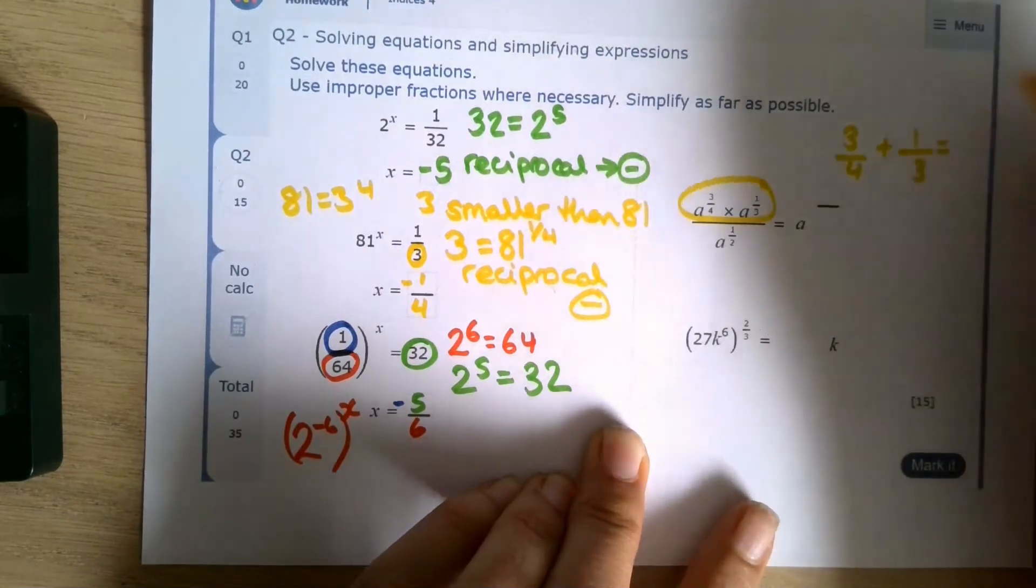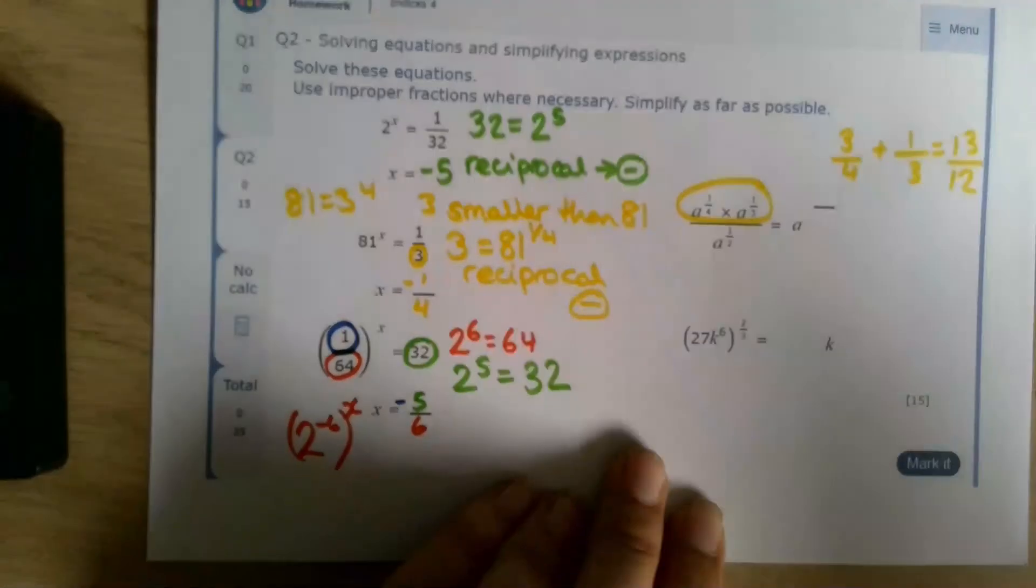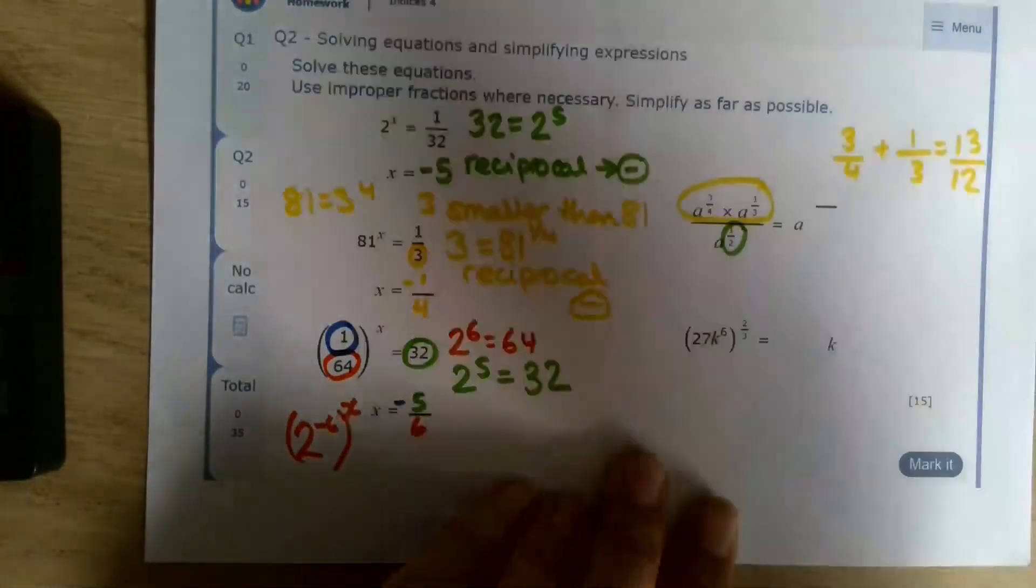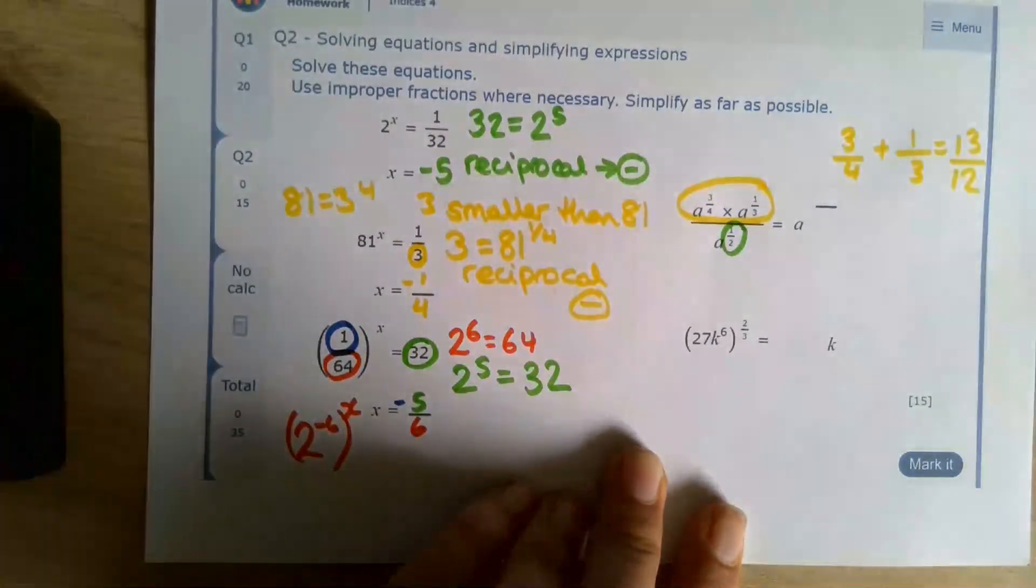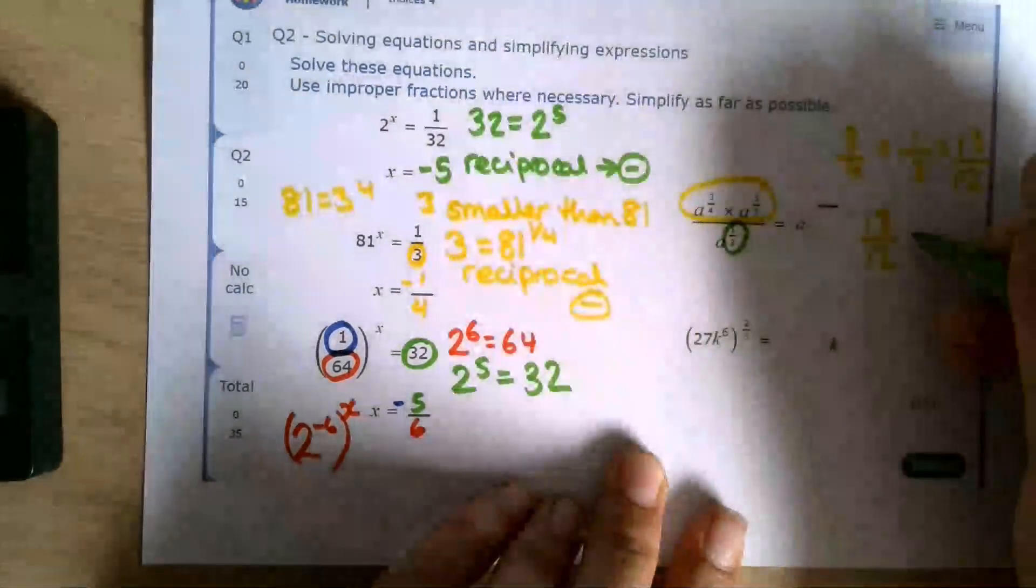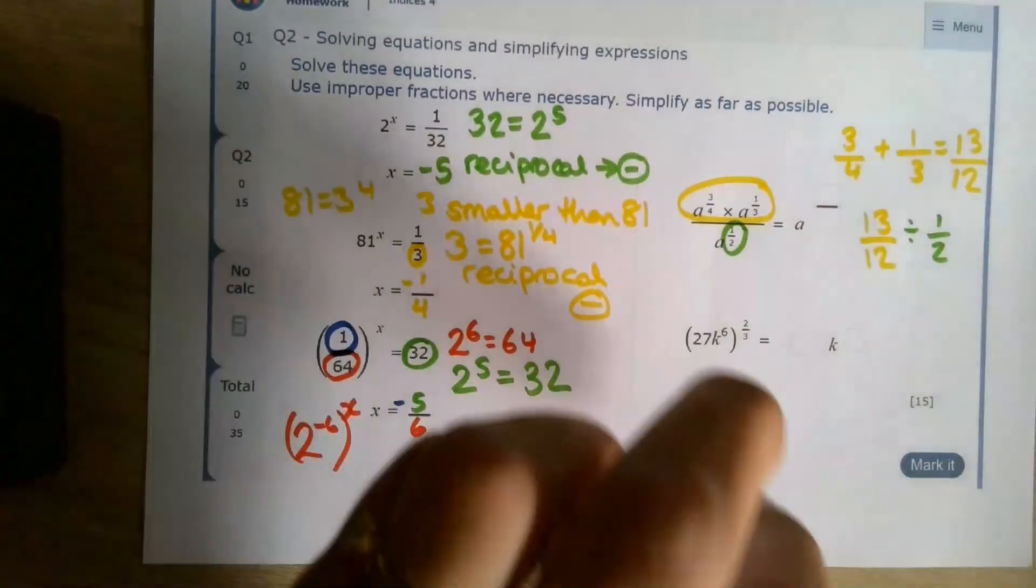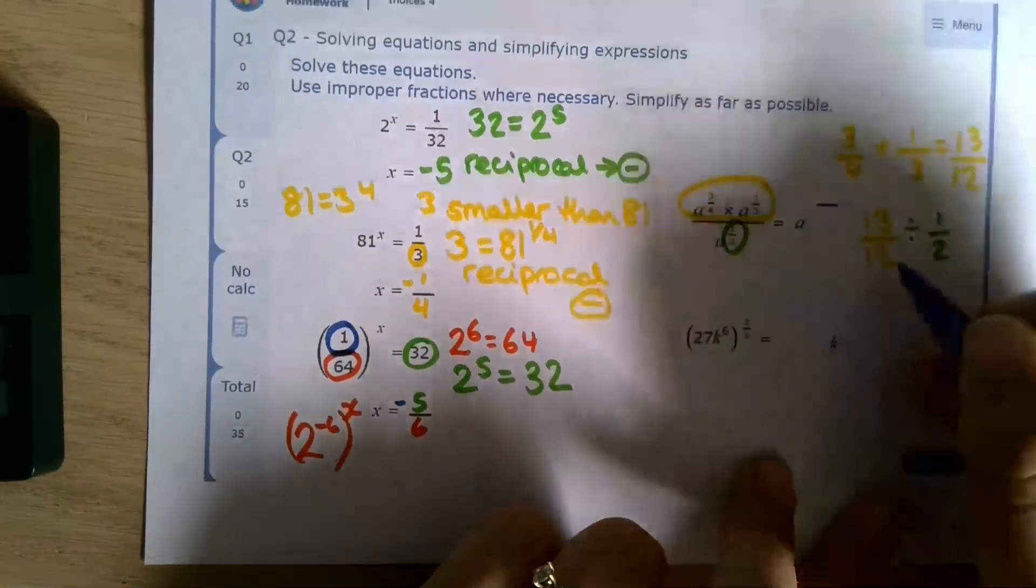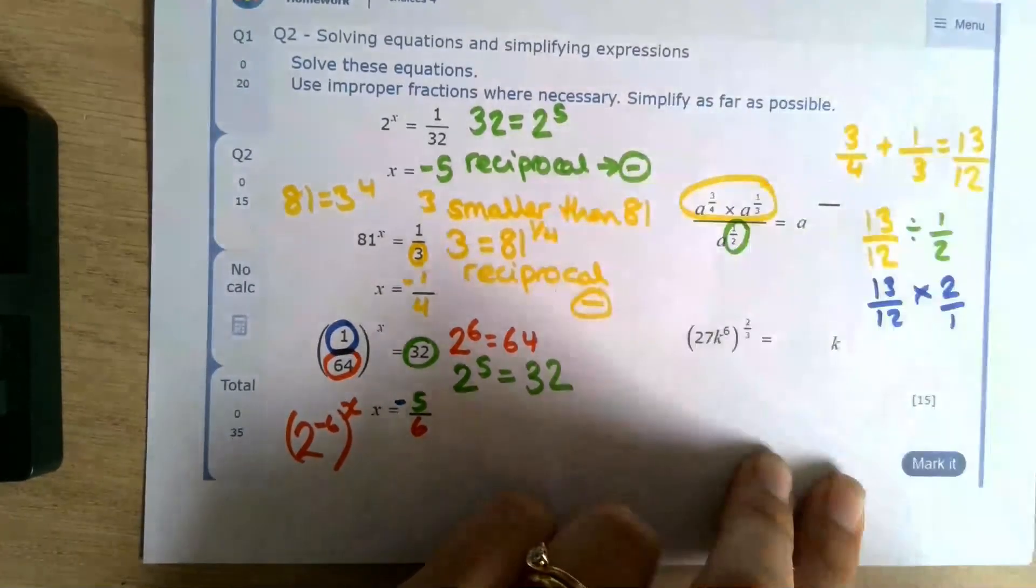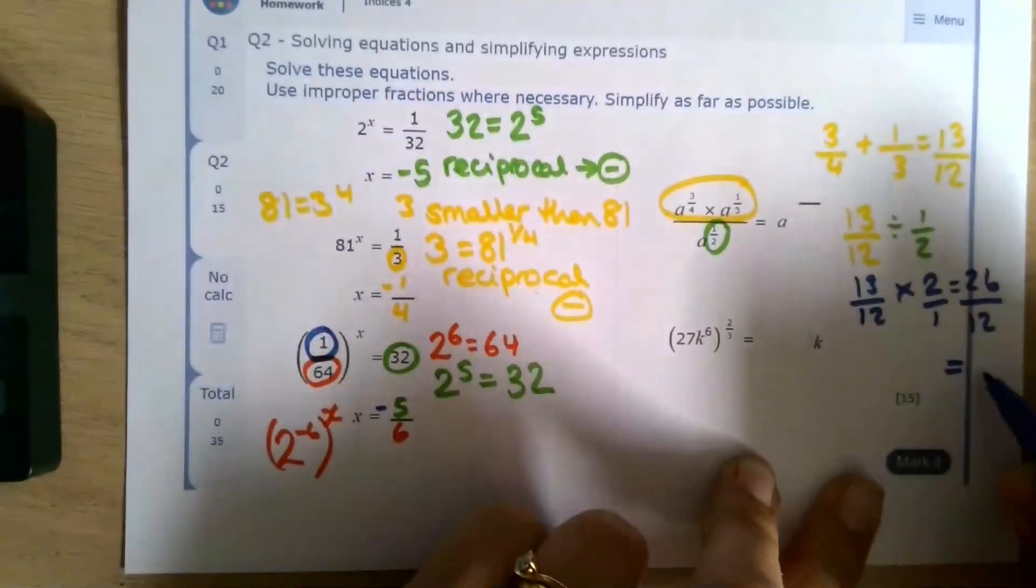9 twelfths, 4 twelfths, 13 twelfths. That's the power of the numerator. And then we've got the denominator, which is 1 over 12. That's a division. We're going to do the power of the numerator divided by the power of the denominator. Because we're dividing by a fraction, we actually multiply by the reciprocal, which gives me 26 over 12, which simplifies to 13 over 6.